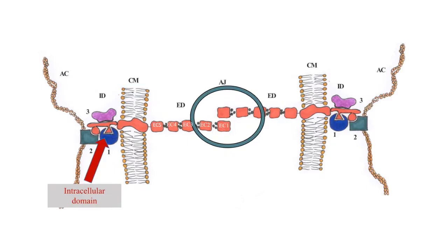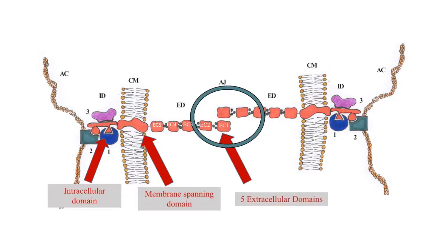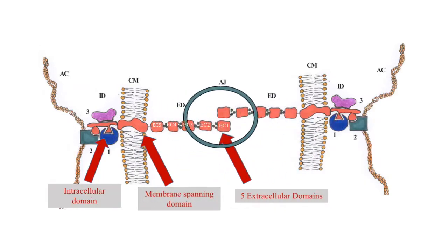Alpha catenin then links the beta or gamma catenin to the actin cytoskeleton. E-cadherins have a single membrane-spanning segment and an N-terminal extracellular segment which consists of five tandemly repeated domains, EC1 to EC5. Extracellular domains of cadherin molecules bound to two different cells bind homophilically to form adherens junctions.